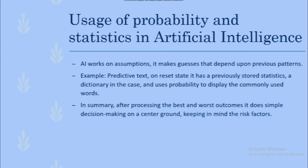For the ease of explanation, let's have an example of predictive text. It has previously stored statistics — a dictionary in this case — and uses probability to display the commonly used words. But as you start typing more and more, it makes choices according to your personal choices of words.